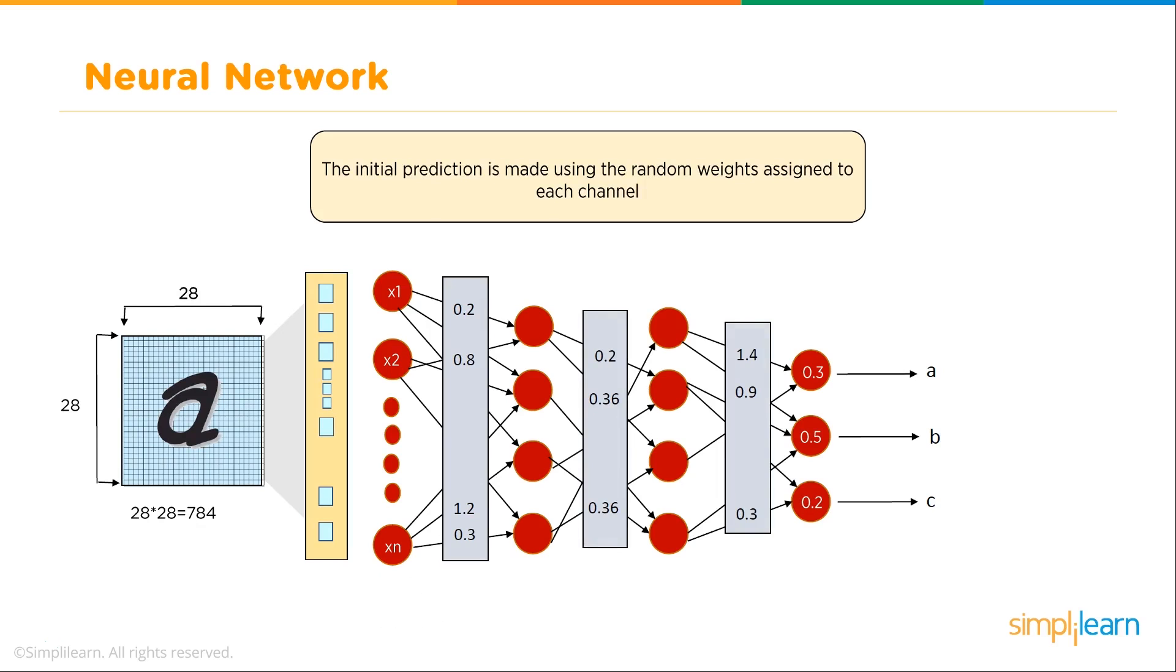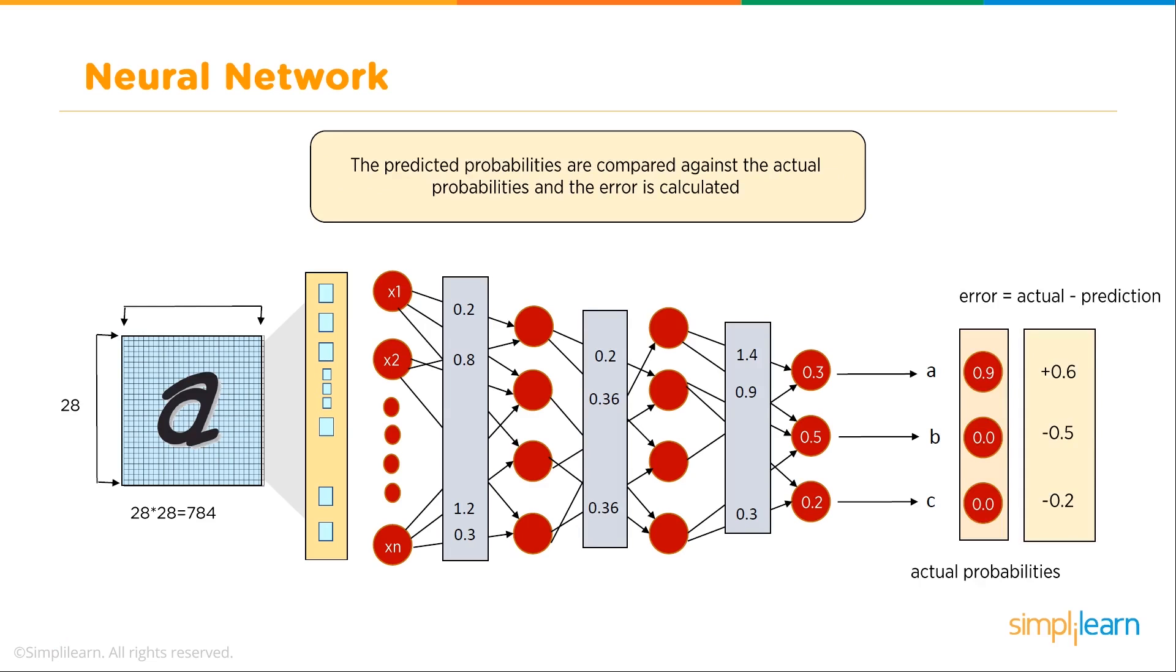The initial prediction is made using random weights assigned to each channel. We have our forward propagation. Each node values are added up going across. Our network predicts the input to be B with a probability of 0.5. The predicted probabilities are compared against the actual probabilities and the error is calculated.